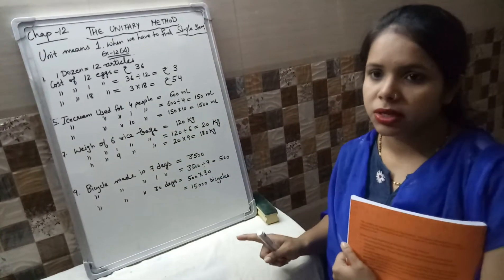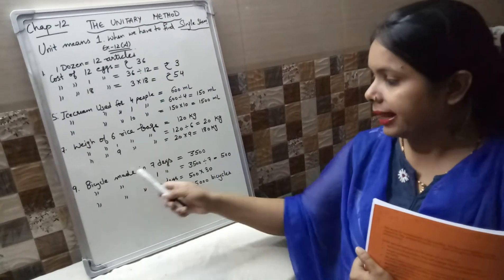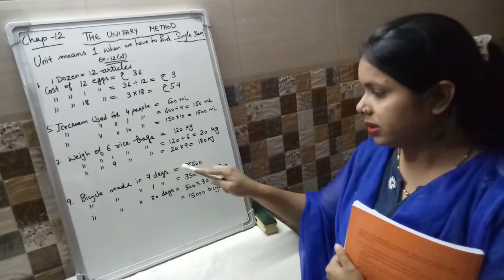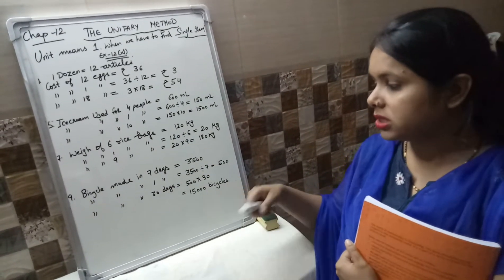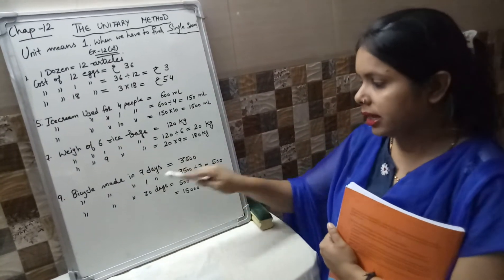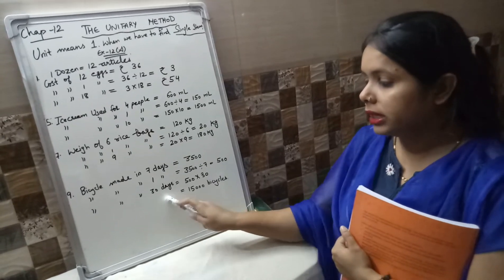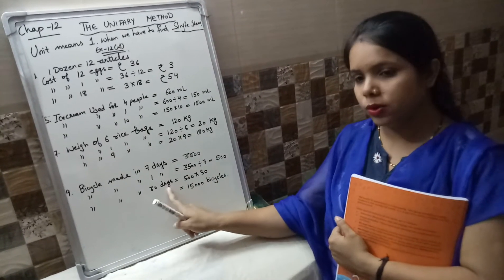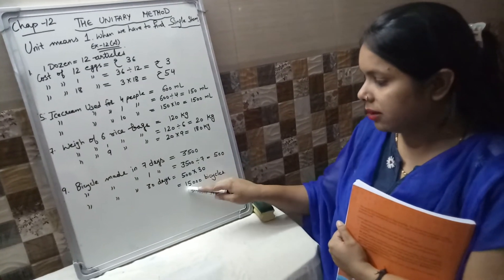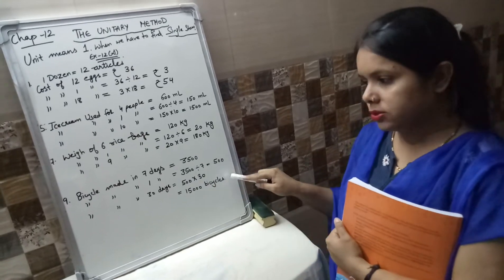Question 8 is in your assignment. Question 9: A factory made 3,500 bicycles in 7 days. In 1 day, how much are they producing? 3,500 divided by 7 — that means in 1 day they are making 500 bicycles. And you have to tell for 30 days — 30 days means 1 month. 500 multiplied by 30 is 15,000 bicycles. That means in a full month that factory made 15,000 bicycles.